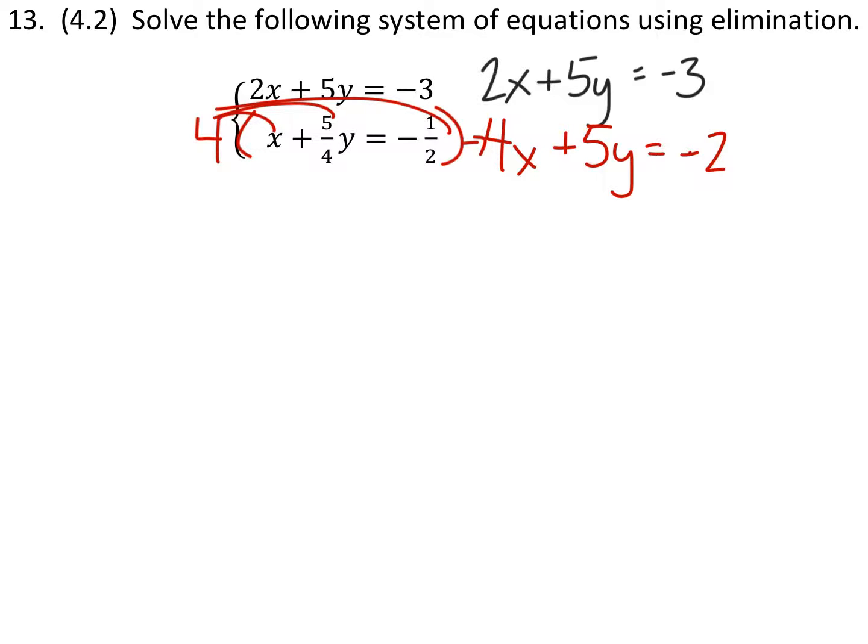Now this is nice because we've got the same coefficient for y's. So we can multiply now, I can multiply this top equation by a negative 1. And bringing this down would have a negative 2x minus 5y equals a positive 3. And that lower equation stays the same.